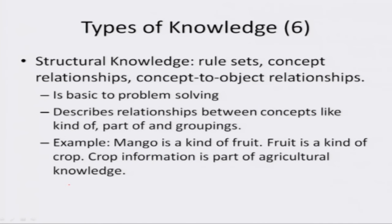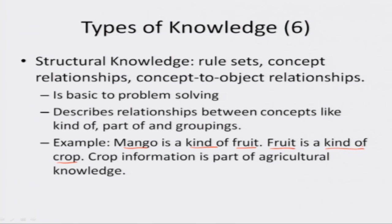Structural knowledge includes rule sets, concept relationships and concept-to-object relationships. It is basic to problem solving and describes relationships between concepts — like 'kind of', 'part of' and other relationships that may enable one to group concepts. For example: mango is a kind of fruit (mango and fruit are concepts; 'kind of' is the relationship); fruit is a kind of crop; and crop information is part of agricultural knowledge (where 'part of' is the relationship).